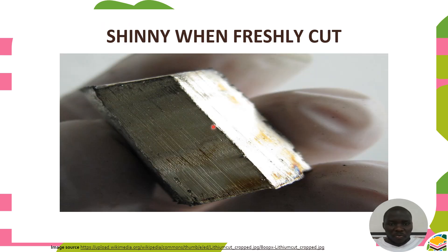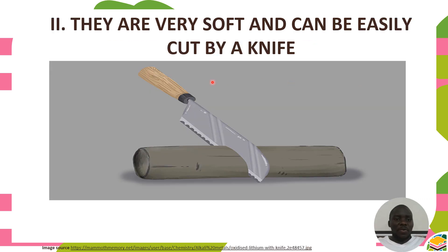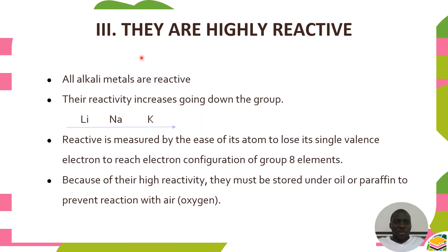The shiny surface can be seen in the video when the metal is freshly cut. The second physical property is that alkali metals are very soft and can be easily cut by a knife, as shown in the diagram of a knife cutting a Group 1 element. They are also highly reactive.